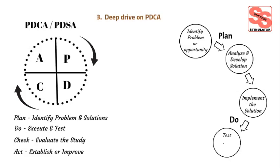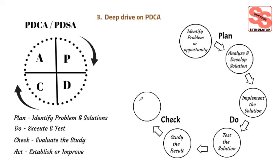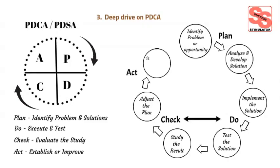In the Check phase, study the results and assess how well the solution worked, how much the goal has been achieved, and whether the methods were proven feasible. Note that there might be back and forth between the Do and Check phases. In the Act phase, standardize the solution, integrating all key learnings across the entire process, standardizing successful parts, and avoiding error recurrence. The Act phase summarizes the current cycle and prepares for the next.